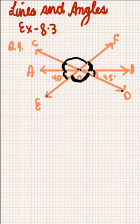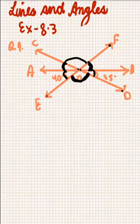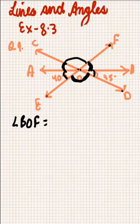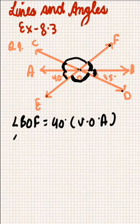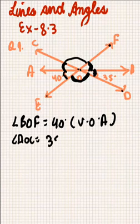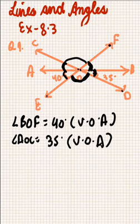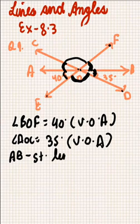Since line EOF and CD intersect at point O, angle DOF equals 40 degrees by vertically opposite angles. Also, 35 degrees equals angle AOC, so angle AOC equals 35 degrees, again by vertically opposite angles. Now I can find the measure of angle EOD, because AB is a straight line, so 40 degrees plus angle EOD plus 35 degrees equals 180 degrees.